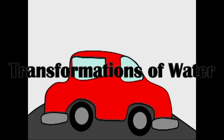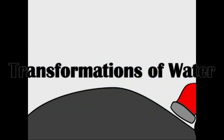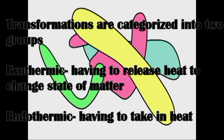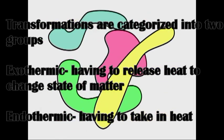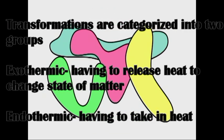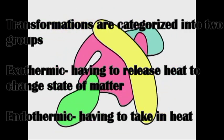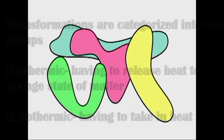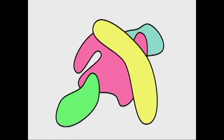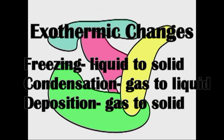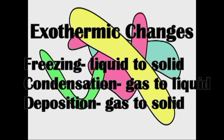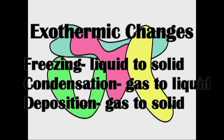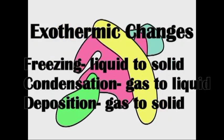The ways water is known for transforming are given different names, and they're categorized in two different ways, as being either exothermic or endothermic. Exothermic meaning they have to release heat to change forms. The exothermic changes are: freezing, from liquid to solid; condensation, from gas to liquid; and deposition, from gas to solid.